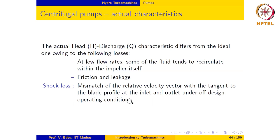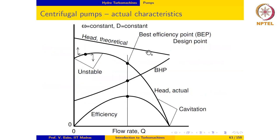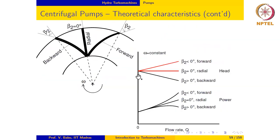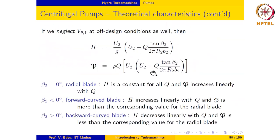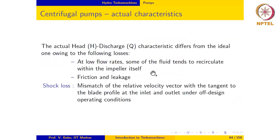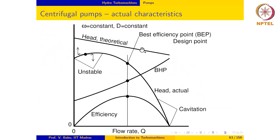As discussed earlier, we assumed V_theta1 to be zero even for off-design conditions when deriving the theoretical characteristic. However, based on the velocity triangles, when the radial velocity changes magnitude at the inlet or outlet, both C_R and V_R change and the triangle will no longer be the same. C1 will no longer be tangential to the blade profile at inlet, and C2 will also not be tangential at the outlet. The shock loss associated with this mismatch can be quite high and causes a significant departure of the actual characteristic from the theoretical one.